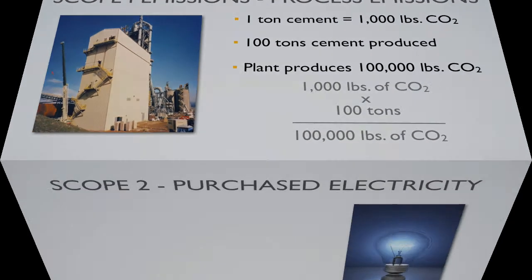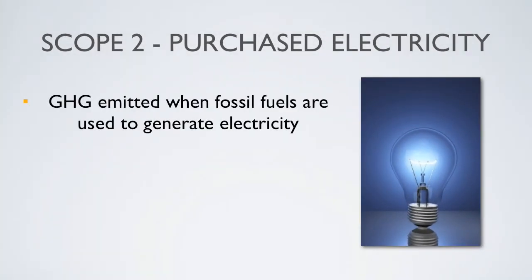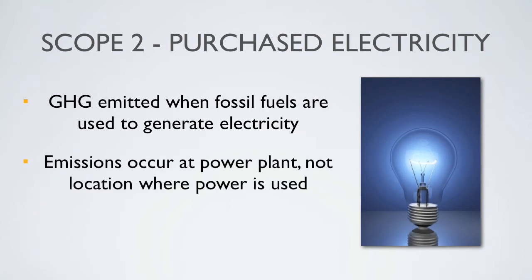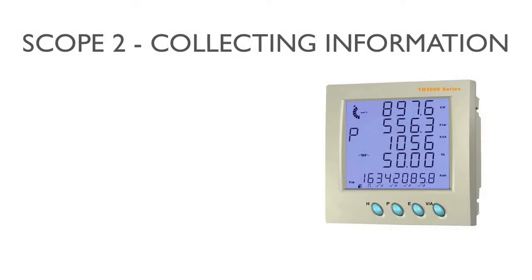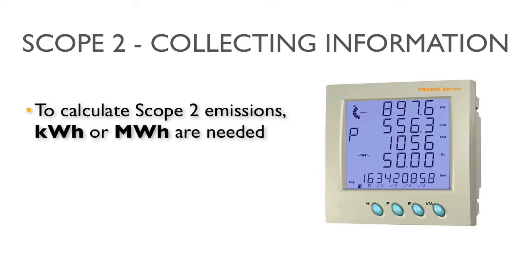When fossil fuels are used to generate electricity, CO2 and other greenhouse gases such as methane are emitted. Even though the emissions take place at the power plant and not the location where the electricity is used, the end user shares responsibility because they are generating the demand and consuming the electricity. The activity data needed to calculate greenhouse gas emissions from Scope 2 electricity use are normally kilowatt hours or megawatt hours of electricity consumed. This information can be obtained from the facility's monthly electric bill or from on-site meter readings.